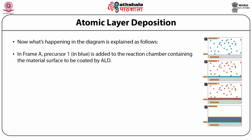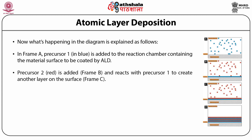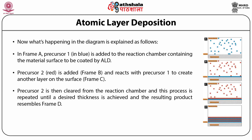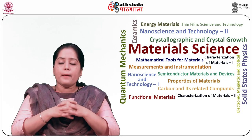According to this figure, in frame A, precursor 1 (shown in blue) is added to the reaction chamber containing the material surface to be coated by ALD. After precursor 1 has been adsorbed on the surface, any excess is removed from the reaction chamber. Then precursor 2 (shown in red) is added in frame B and reacts with precursor 1 to create another layer on the surface in frame C. Precursor 2 is then cleaned from the reaction chamber, and this process is repeated until a desired thickness is achieved, with the resulting product resembling frame D.